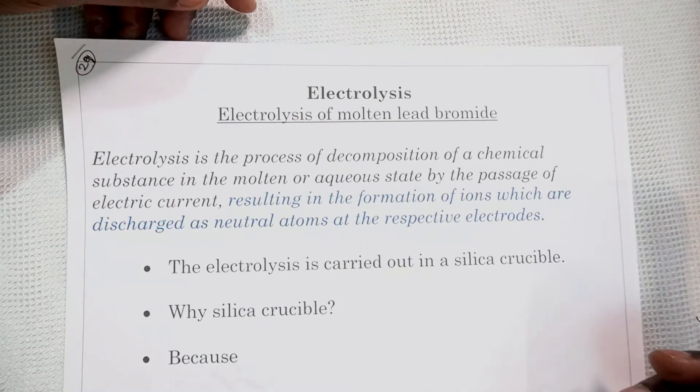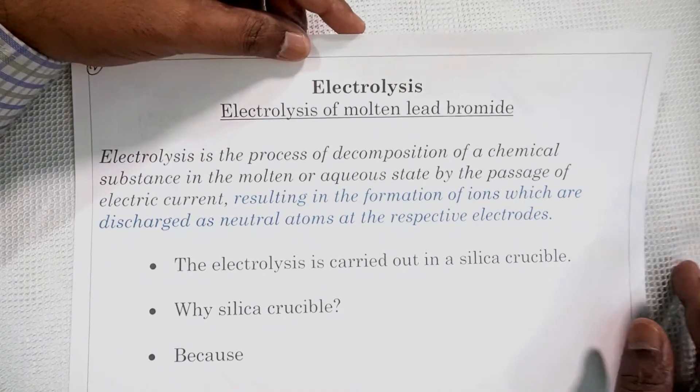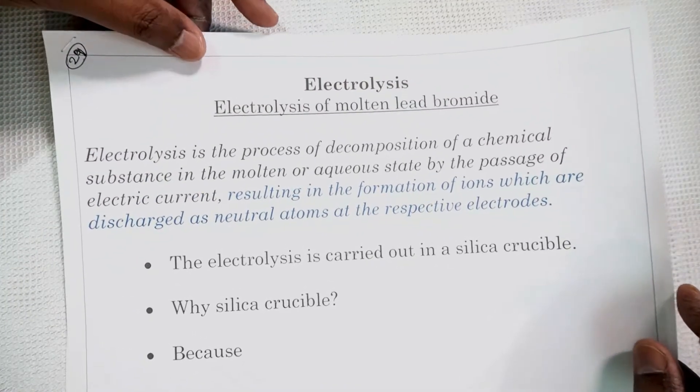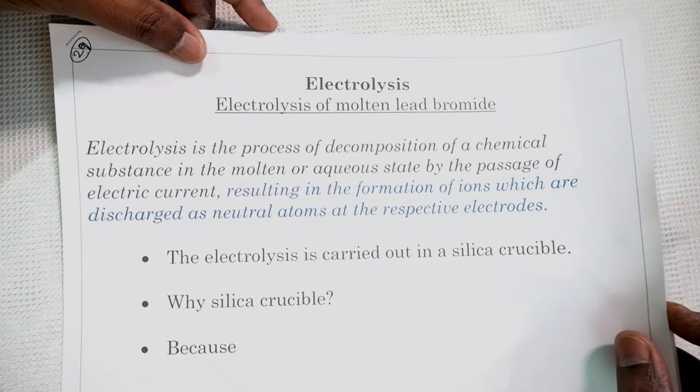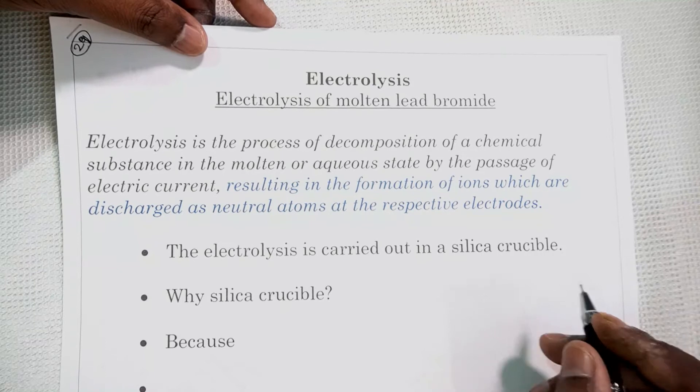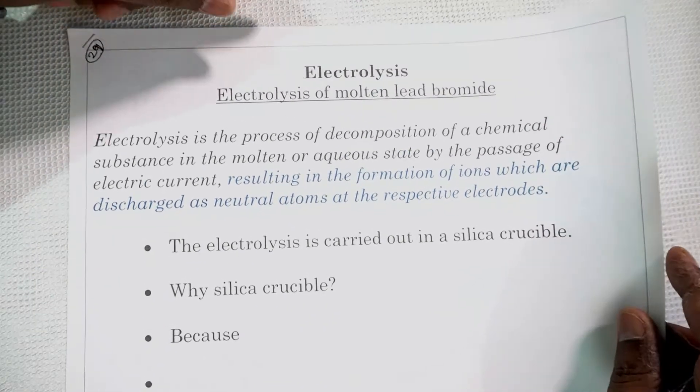We know that electrolysis is the process of decomposition of a chemical substance in the molten or aqueous state by the passage of electric current. Now electrolysis of this molten lead bromide as a first example we take. It's a solid substance and it is heated to melting, so the molten state is there.